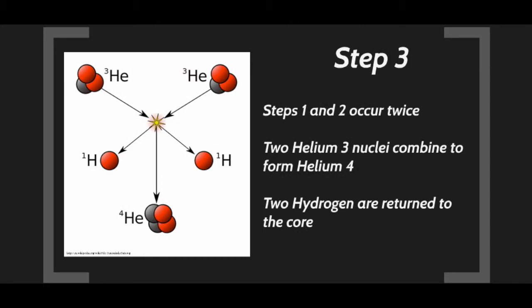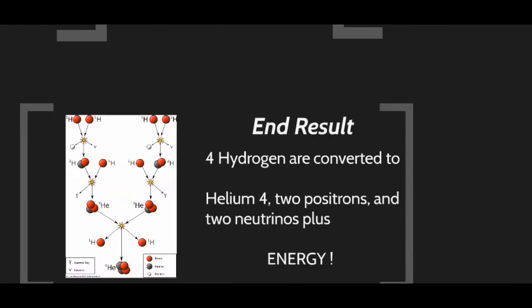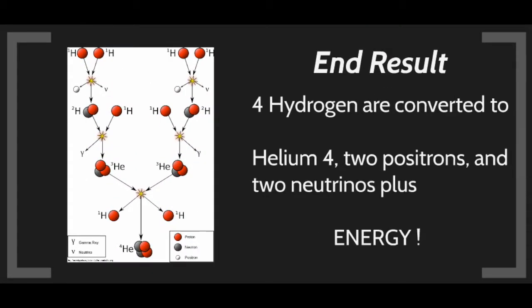Steps one and two must occur twice in two separate places because step three requires two helium-3 nuclei. These two helium-3 nuclei collide and bind, and two protons come out of that collision. What remains is a stable isotope called helium-4. The end result is that four hydrogen nuclei — four protons — are converted to one helium-4 nucleus, two positrons, two neutrinos, and gamma rays.